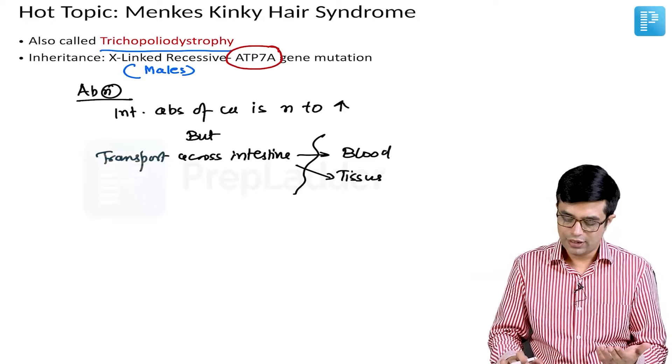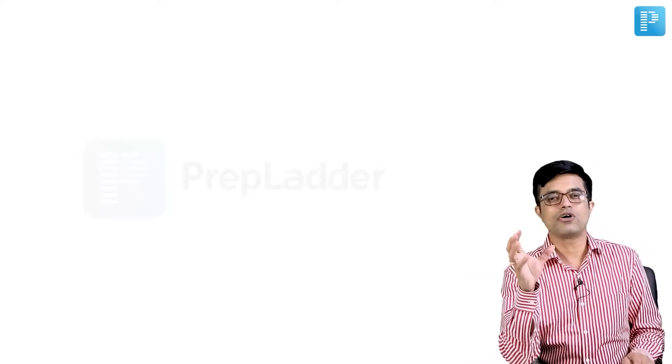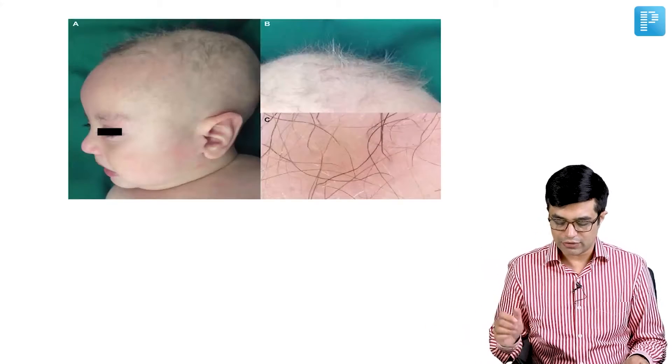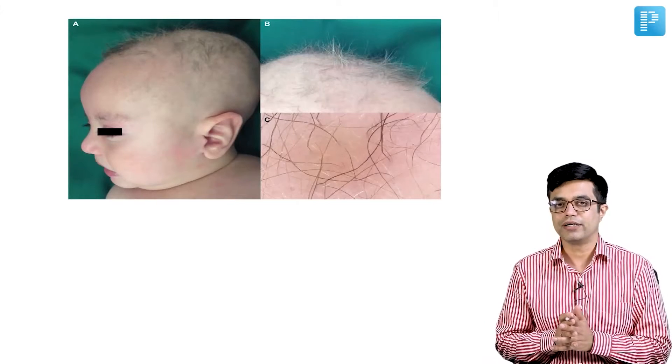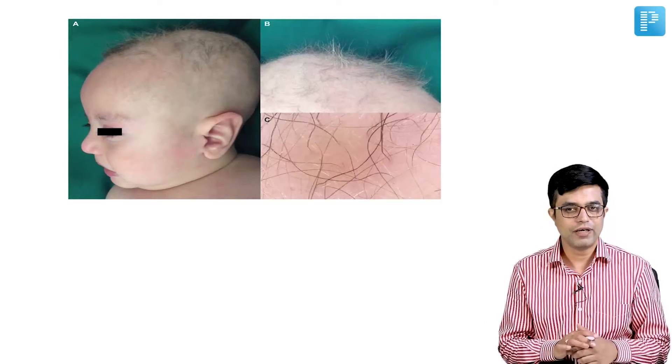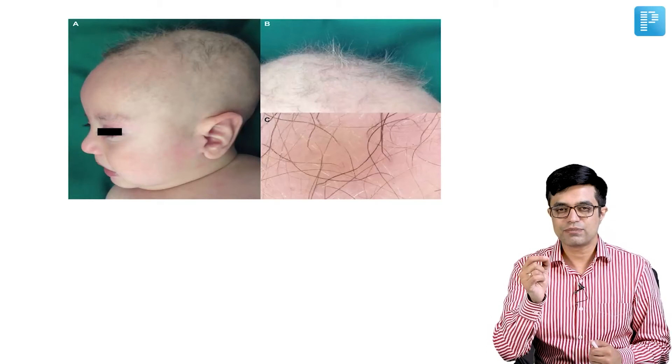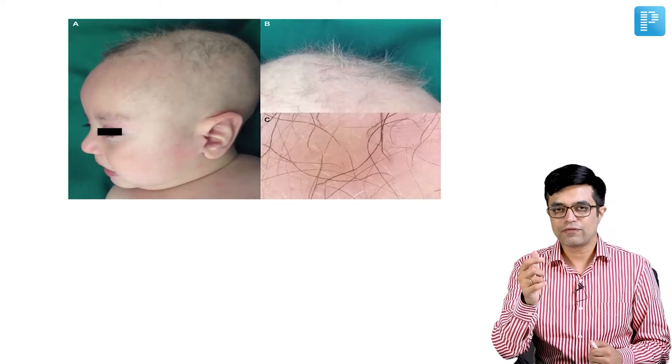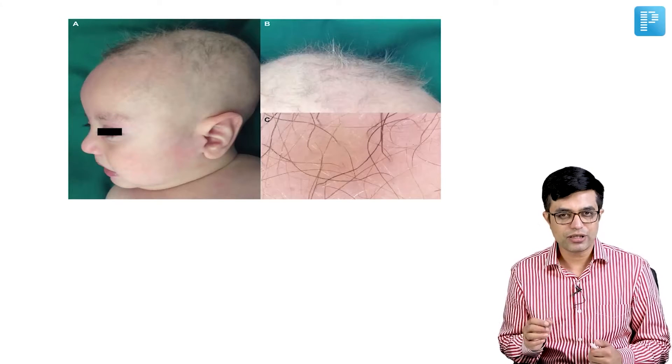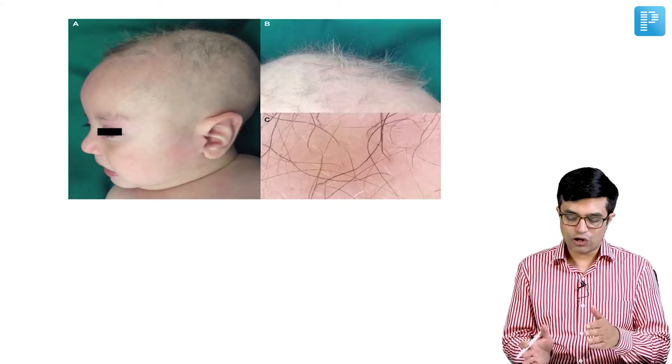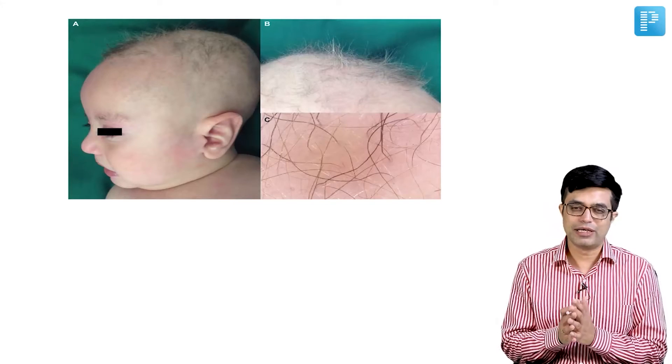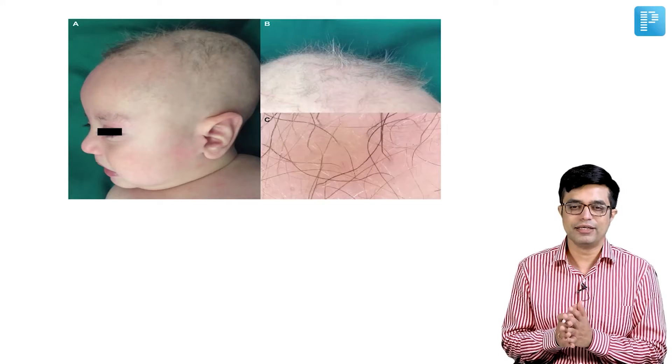If you look at the clinical features, first of all, the hallmark of these patients is abnormal hair, and that is why the name is Menkes Kinky Hair Syndrome. If you look at the hair of these children, in the first year of life you will have hair which are very thin, which are sparse, not very dense. Some of them may show hypopigmentation; they will be brittle and easily pluckable. Such kind of a pattern along with neurological problems is the typical manifestation you find in Menkes Kinky Hair Syndrome.